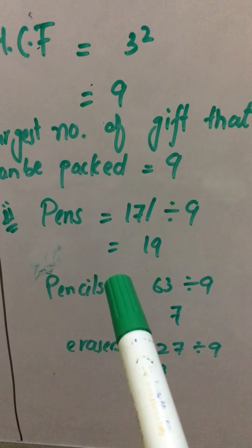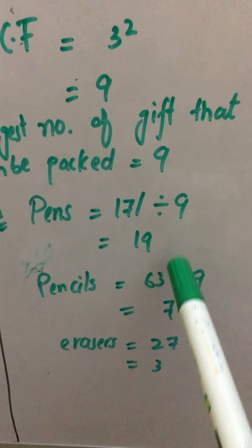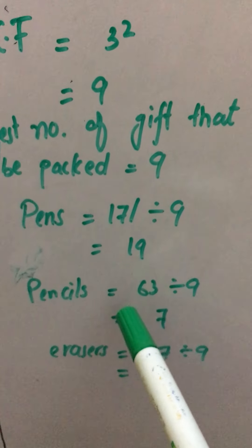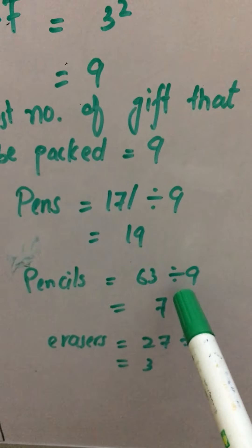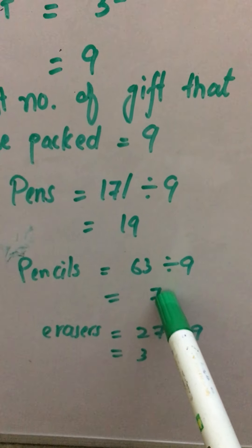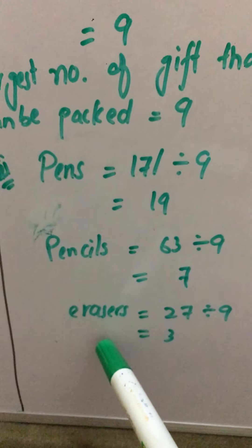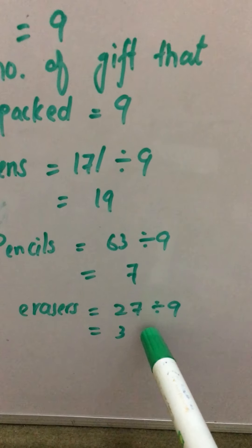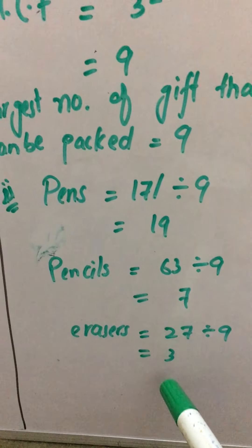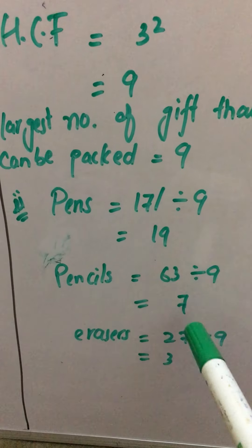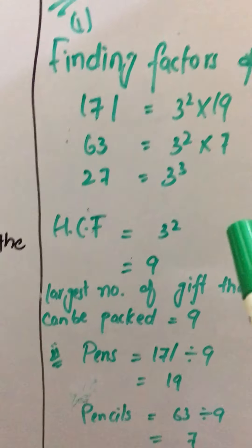To find the number of pens, we divide 171 by 9 and get 19. Then we divide the number of pencils, 63, by 9 and get 7. Finally, we divide the number of erasers, 27, by 9 and get 3. In this way we have found the number of each item in a gift bag.